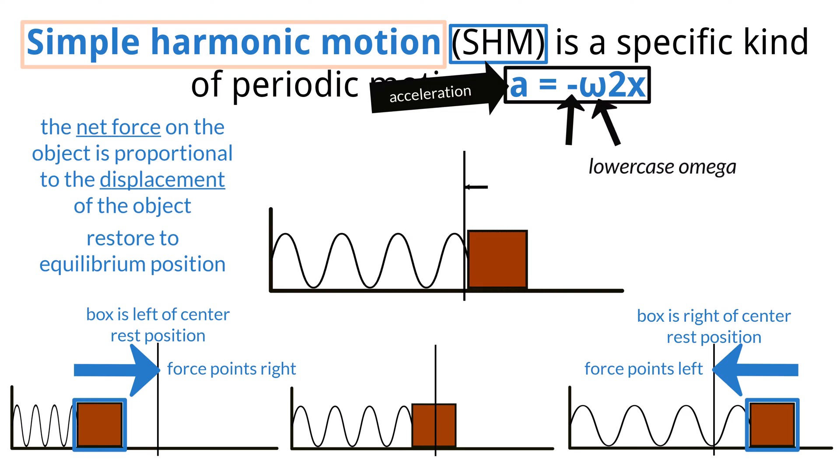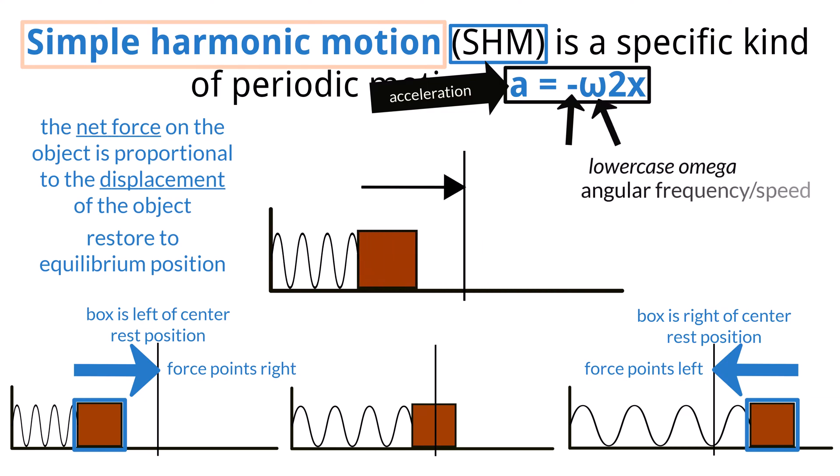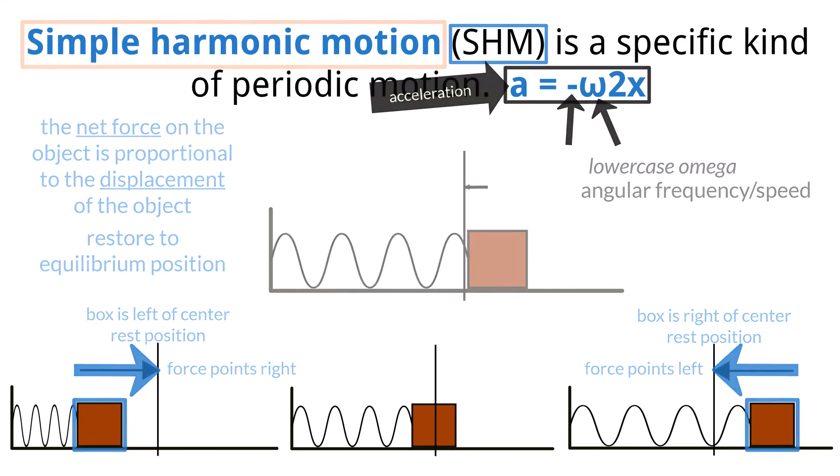The lowercase omega, not a w, is the angular frequency or speed of the particular event and will be discussed more in depth in a bit.